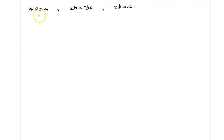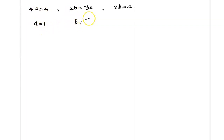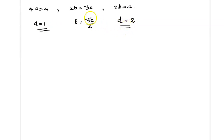So from the equations: 4a equals 4, giving a equals 1. From 2d equals 4, d equals 2. From 2b equals minus 3e, b equals minus 3e divided by 2. And from 4c equals e, c equals e divided by 4.